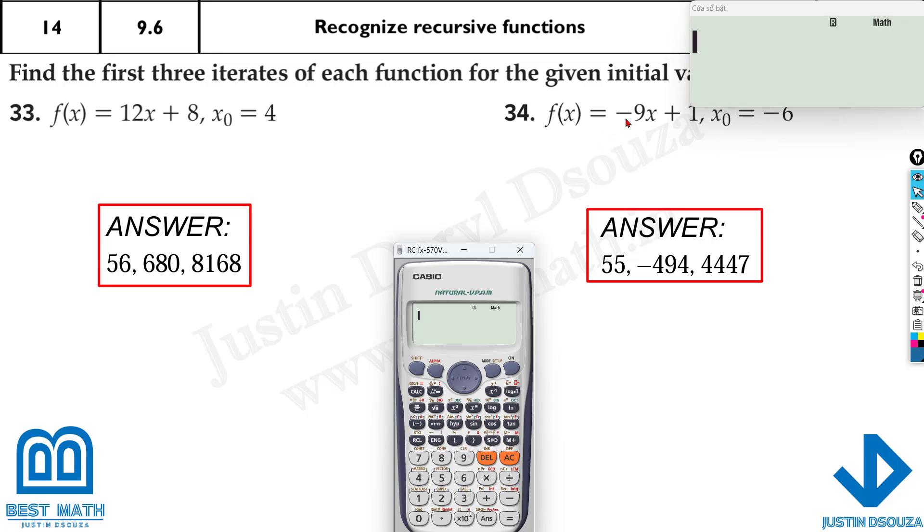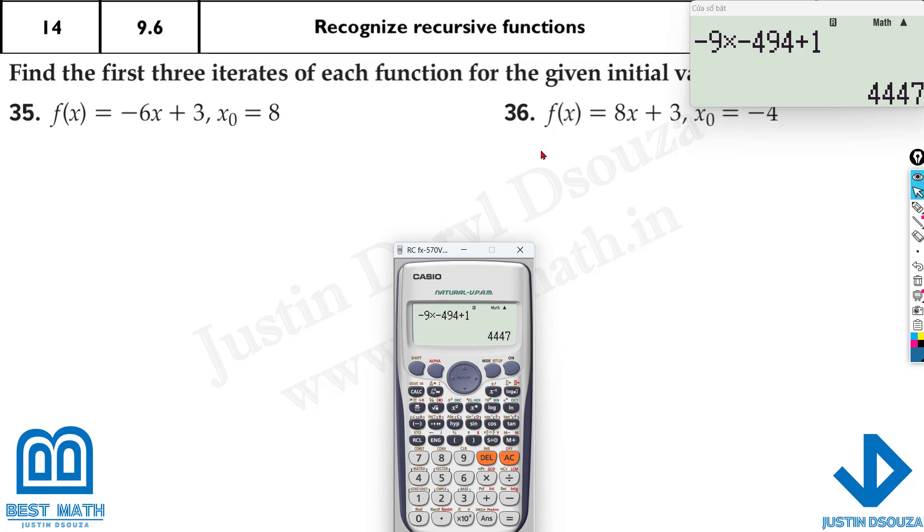Calculate, okay, again, I'll just put it over here directly, minus 9 times minus 494 plus 1. You will get the answer, that's the last answer. But it's better to put in terms of variable and then calculate at different x values. So all these problems just like that, you can solve it very easily.